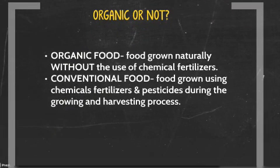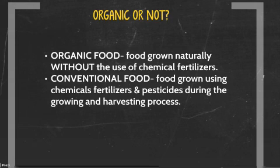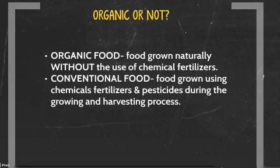When buying fresh produce and other food products, do you buy the organic or non-organic? What's even the difference between the two? Organic foods are foods grown naturally without the use of chemical fertilizers. Conventional foods are foods grown using chemical fertilizers and pesticides during the growing and harvesting process. Conventional foods usually also have a lot of additional preservatives and extra chemicals as well. I would choose the organic foods simply because they are more natural since they are not grown with chemical fertilizers.